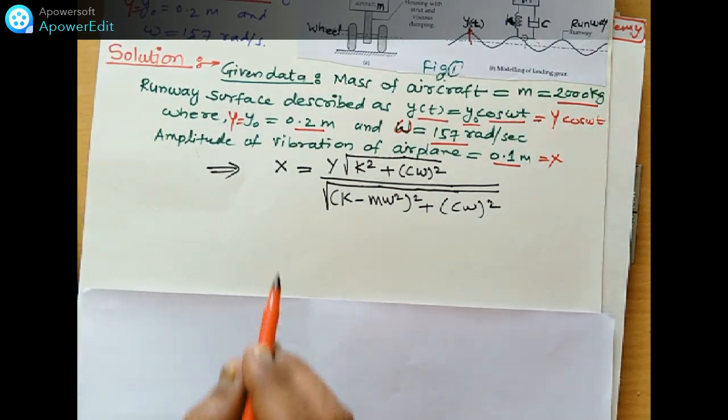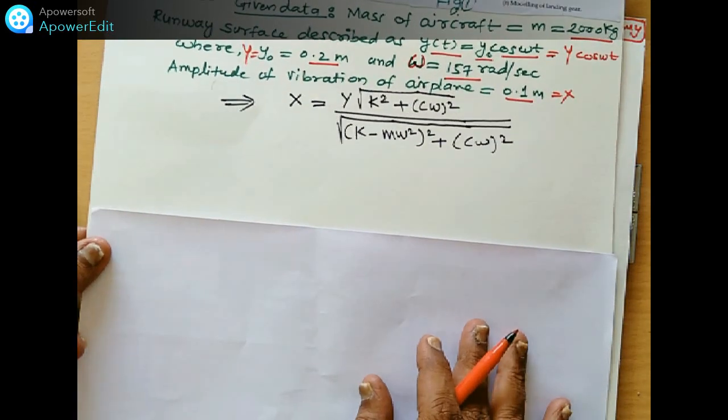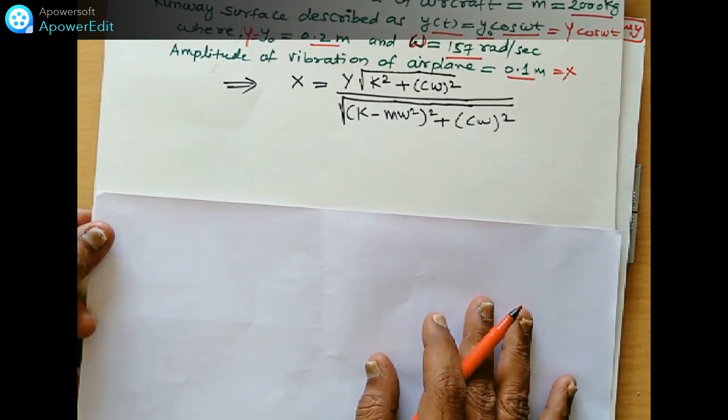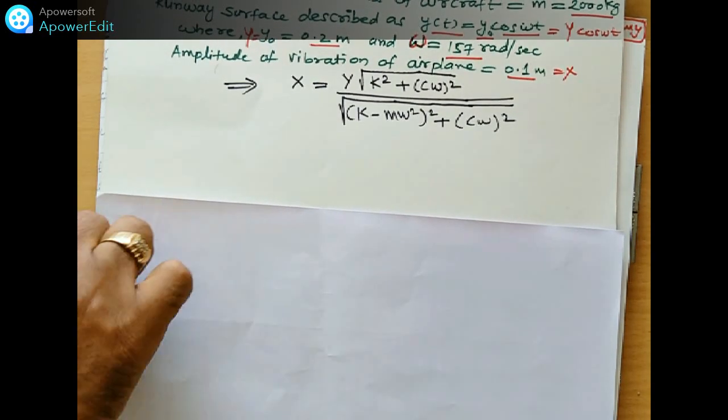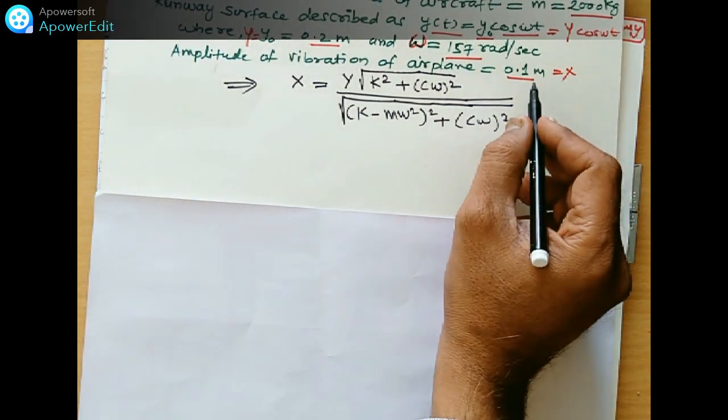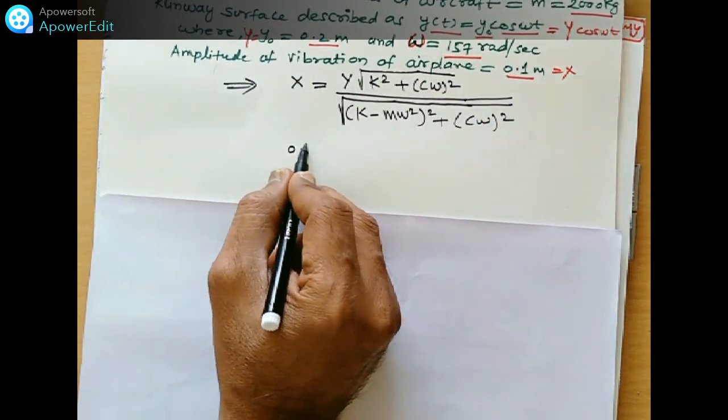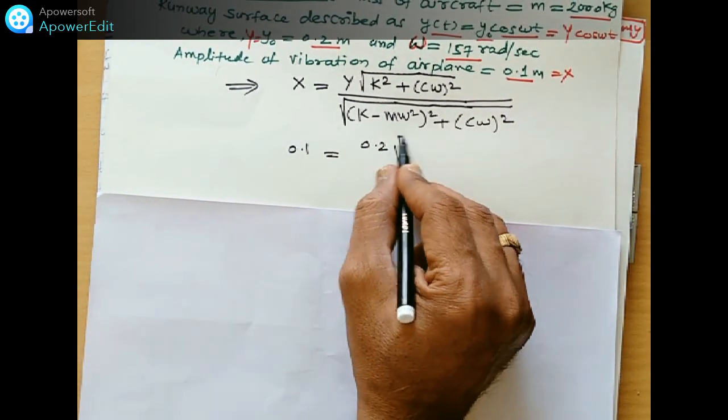Let's put the values. We know the values of x and y. Already we have written the value of x is 0.1, which is equal to 0.2 square root of, what is the value of k? k we don't know, we have to find out. Plus c, c also we don't know, we have to find out.